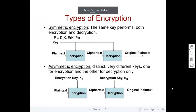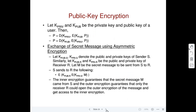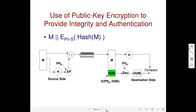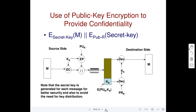We want encryption to provide three things, also known as the CIA: confidentiality, integrity, and authentication. Confidentiality means that whatever information you're sending, you want to make it secret so that no one other than the intended receiver knows or sees the message you're sending.